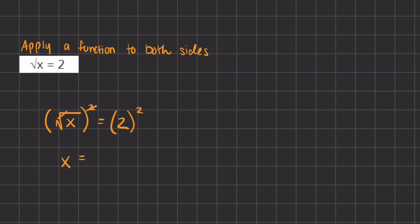On the right-hand side, we are left with 2 raised to the power of 2, which is 2 times 2. If we multiply 2 times 2, we get 4. So the value of x is 4, and we found it by applying the square function on both sides. That was the final manipulation method, and now we are going to solve a problem using both manipulation and simplification methods.